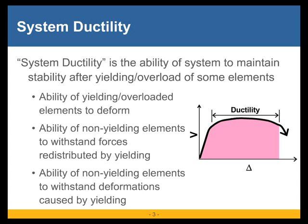What certain aspects of that could be is the ability of the yielding or overloaded elements to deform and have stable deformation. The ability of the elements that don't yield to withstand the forces caused by the yielding of those other elements, and by the fact that forces will redistribute. When you're going into an inelastic, responsive structure, the force distribution can be very different from an elastic distribution. Also, the ability of the non-yielding elements to withstand the deformations caused by the yielding of the structure.